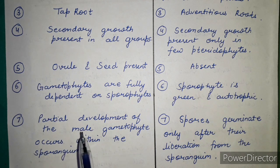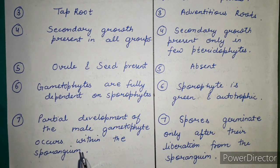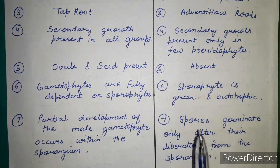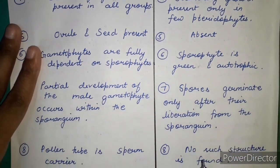There is partial development of the male gametophyte within the sporangium in gymnosperms — microspores are shed at the 3-cell, 4-cell, or 5-cell stage, indicating this partial development. In contrast, spores in pteridophytes germinate only after liberation from the sporangium.